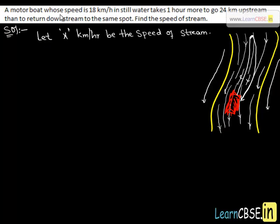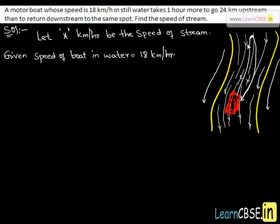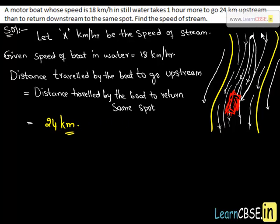In this problem, we have given the speed of the boat as 18 kilometers per hour. The distance traveled by the boat upstream and the distance traveled by the boat to return to the same spot is 24 kilometers. This means the distance upstream equals the distance downstream, both equal to 24 kilometers.